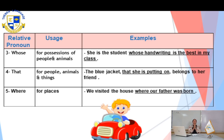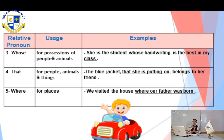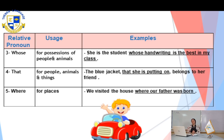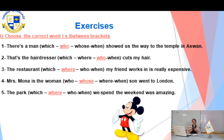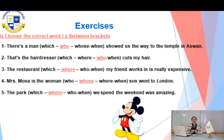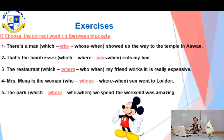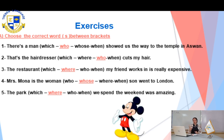Now please get ready to answer the first exercise: choose the correct word between the brackets. Move to slide number five. 'There is a man [which / who / whose / when] showed us the way to the temple in Aswan.' Where is the noun? 'A man' — and a man is a person. So what is the relative pronoun we are going to use? 'Who.' Very good. The sentence is: 'There is a man who showed us the way to the temple in Aswan.'